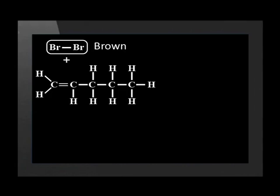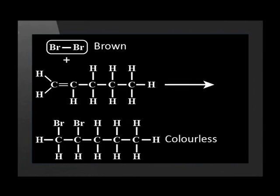Unlike the addition of hydrogen, halogens add quickly and without the need to heat the reactants. The product is a clear, colorless compound which explains why the brown color disappears, and this is the test for unsaturated compounds.